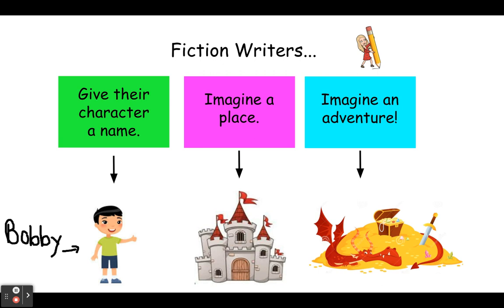Today we're going to be able to write our very own fictional story. There are three main things that we want to think about when we write a fictional story. First, we want to give our character a name — so we want to pick a character. It can be a human, an animal, a boy or a girl, somebody like a grandma or grandpa, a frog, or a dog. You can think of any kind of character that you want.